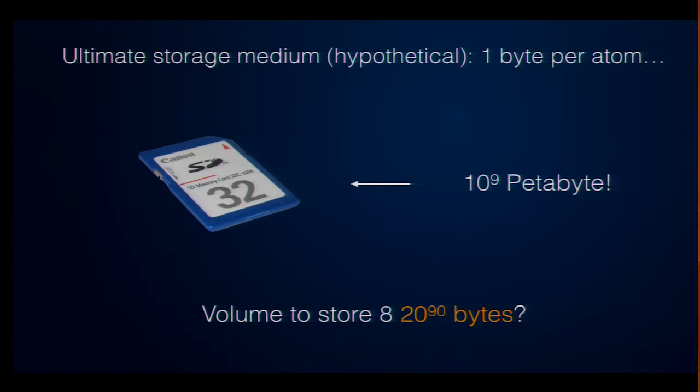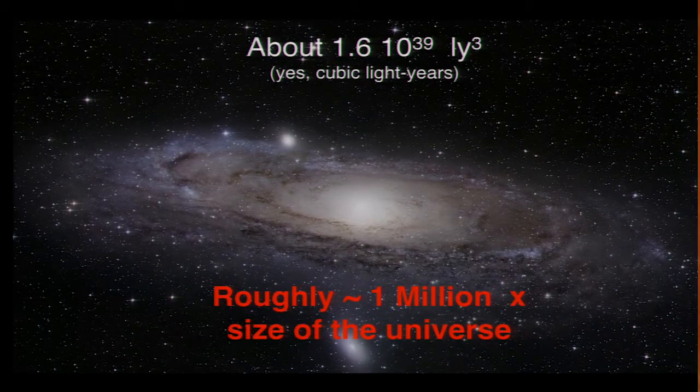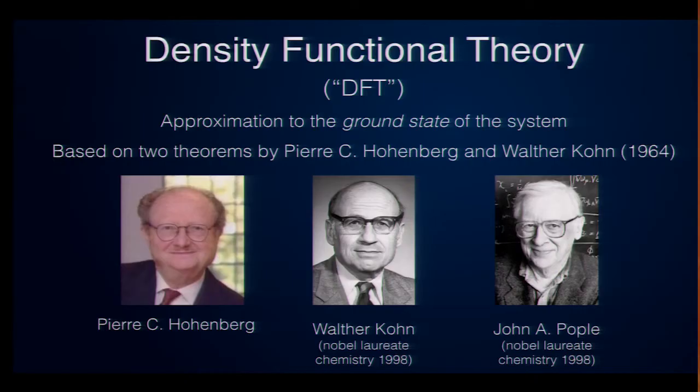So, how much volume would you need of this medium to store the wave function of this simple ethane molecule? If you do the math, you will end up with 1.6 times 10 to the 39 cubic light years. So, this is roughly, very roughly, one million times the size of the universe. So, I think you can rightfully call that big data. Of course, this is just to convince you that it's never going to be practical to really go that route and solve Schrödinger's equation directly for the wave function.